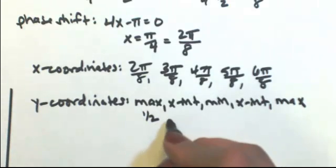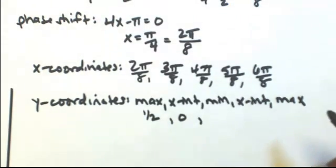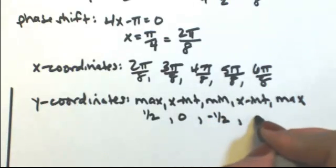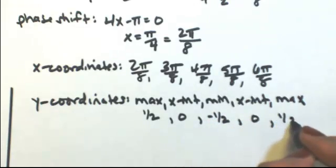So our max is at one-half. X-intercepts are always zero. The min would be negative one-half, and then max at one-half.